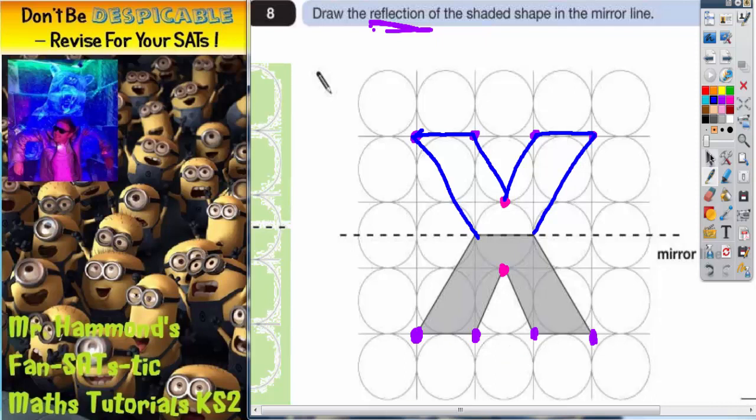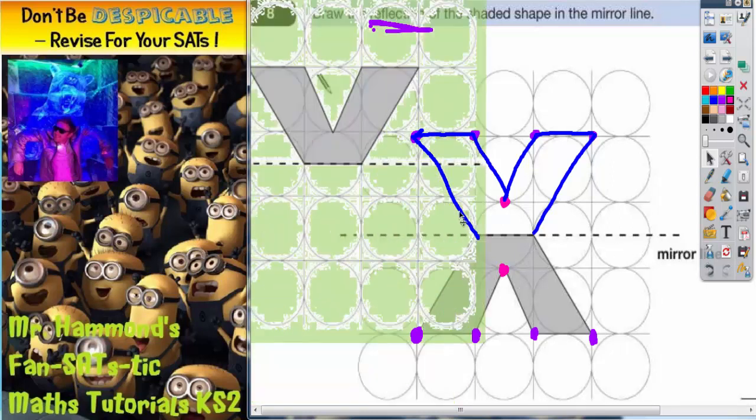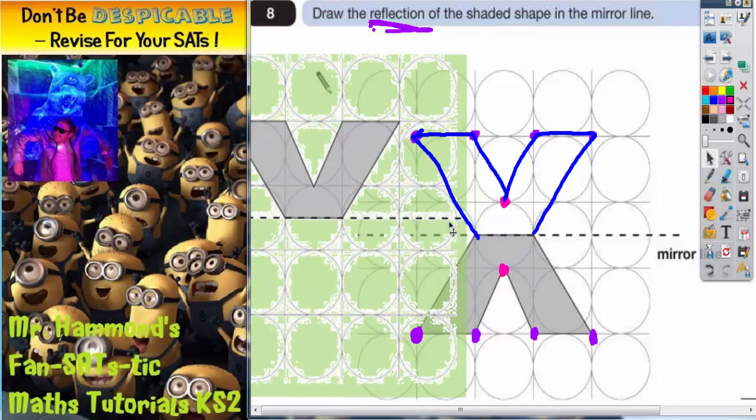The other way of doing this is to actually get some tracing paper. And you'd start by tracing your grey shape and tracing the mirror line as well. And then what you'd actually do is you would flip that tracing paper over. So here is my tracing paper. I've traced it and then I've flipped it over.